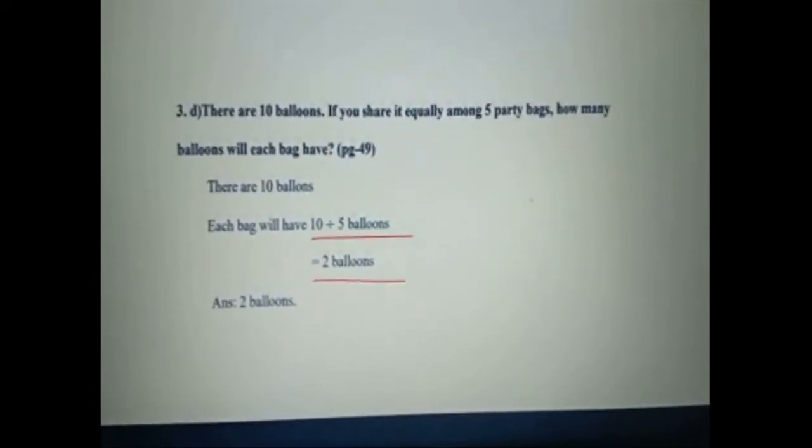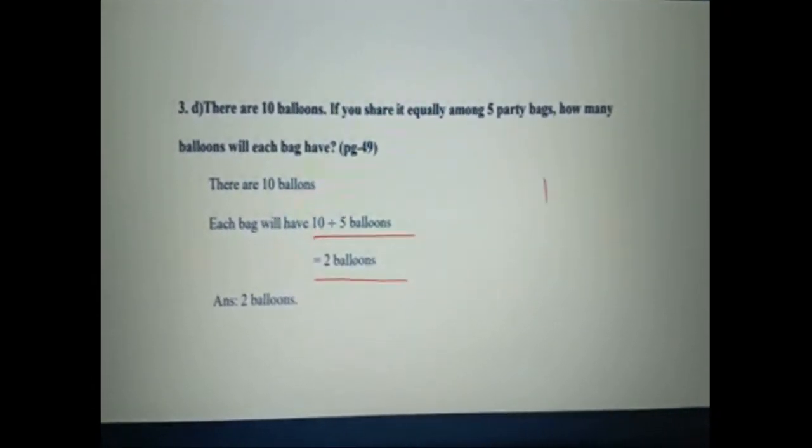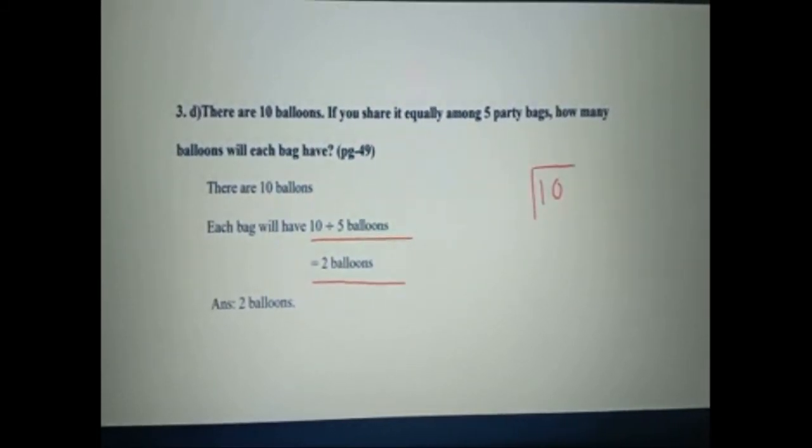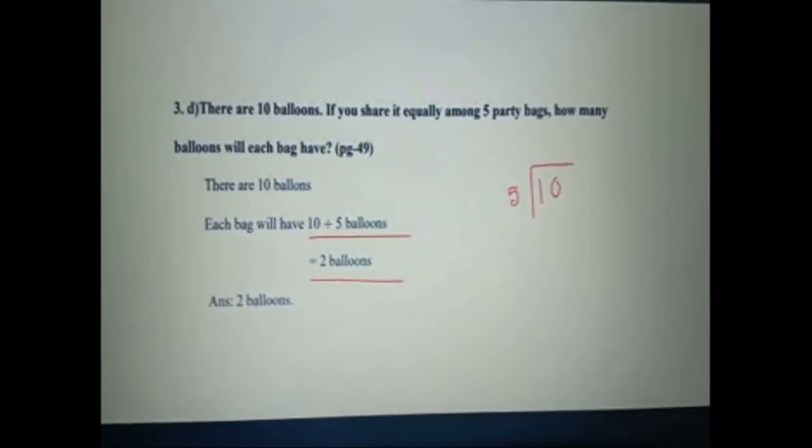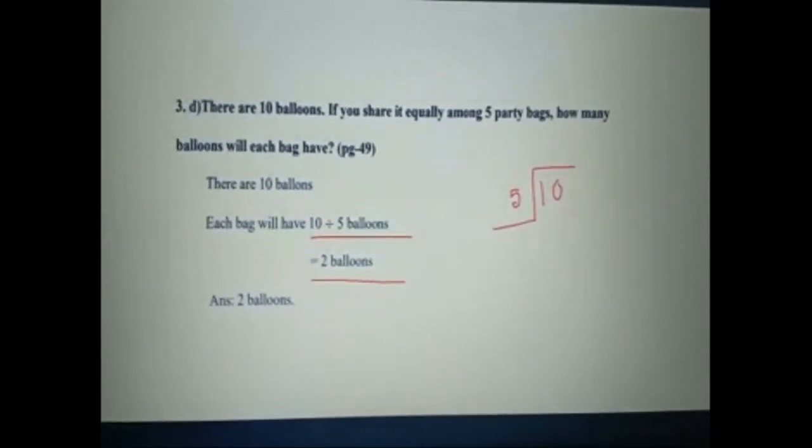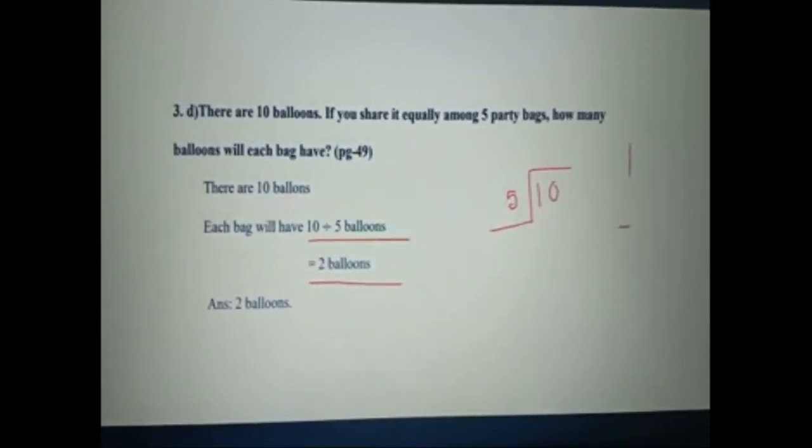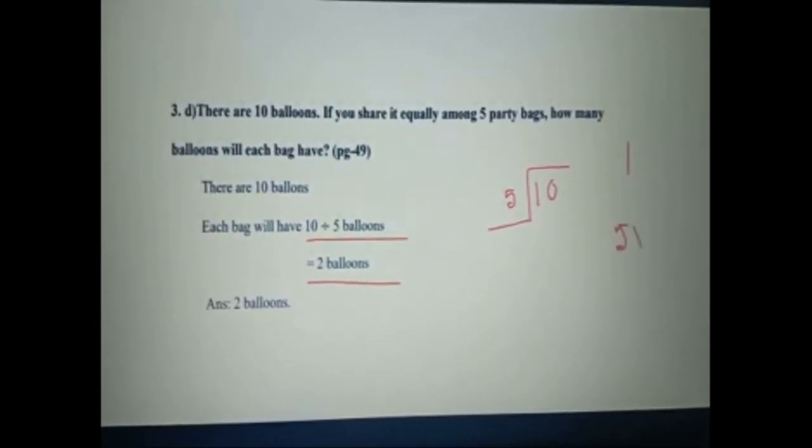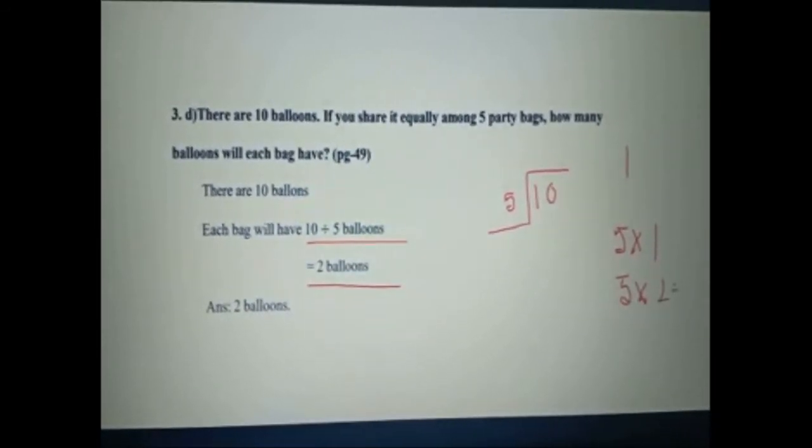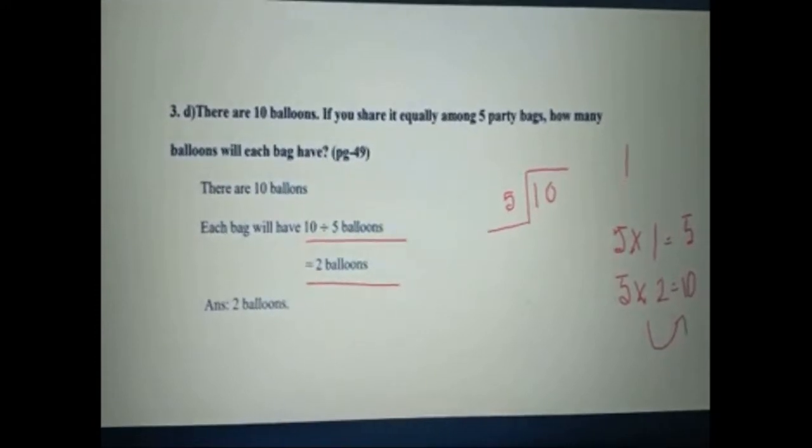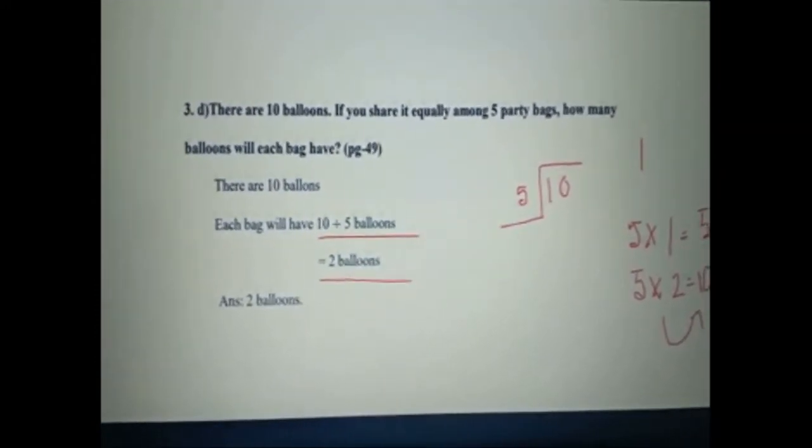Because if we arrange it like this, what we can see? We can see five groups, two times to 10. Five groups, two times to 10. So the answer will be two balloons.